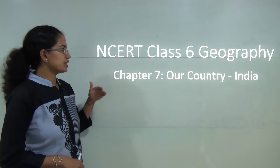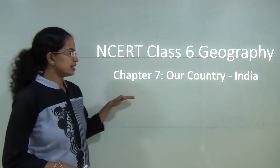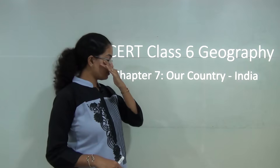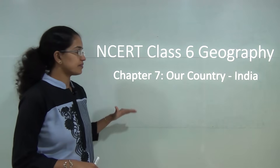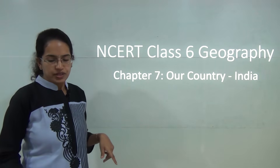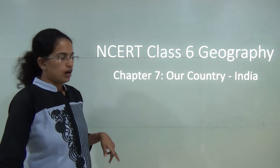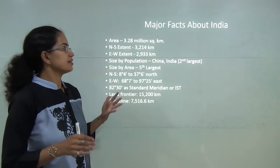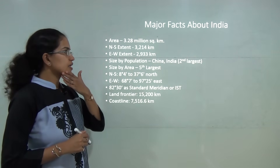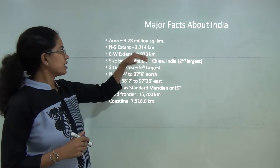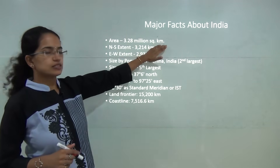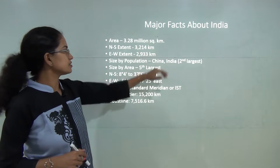Welcome. We will continue with our NCERT Class 6 series covering Chapter 7, that is 'Our Country India.' We will first start with the major facts about India. The total area is 3.28 million square kilometers.